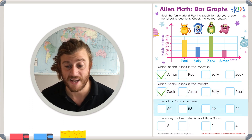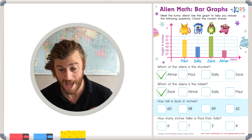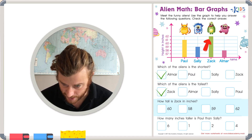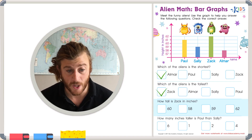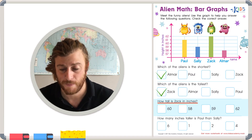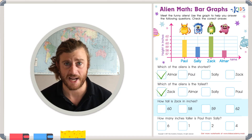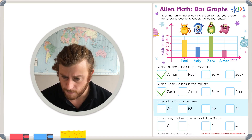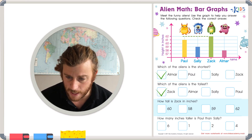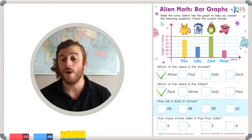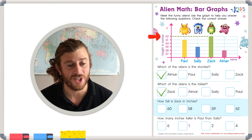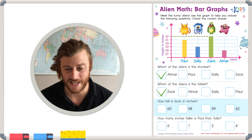Let's put a check in Zach's box. Question three asks us to focus on Zach — how tall is Zach in inches? To find out, we look at the top of his bar and see what line it perfectly matches up with. Zach's bar reaches exactly 62 inches. Let's put a check in Zach's box for 62 inches.